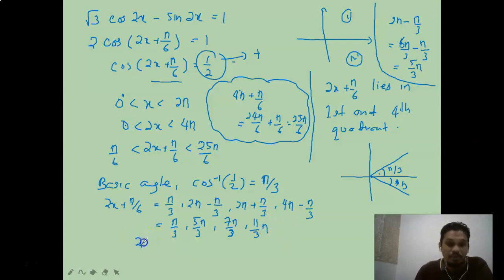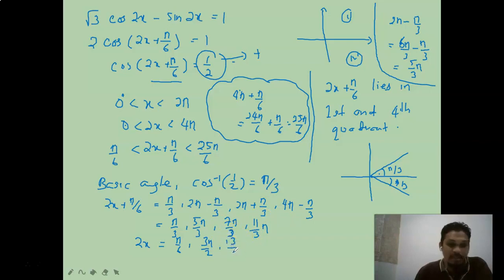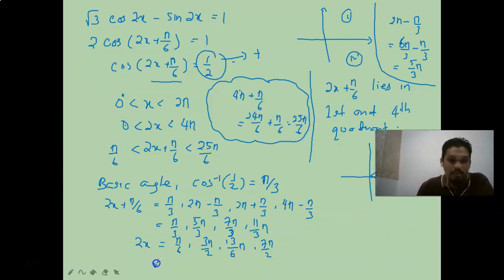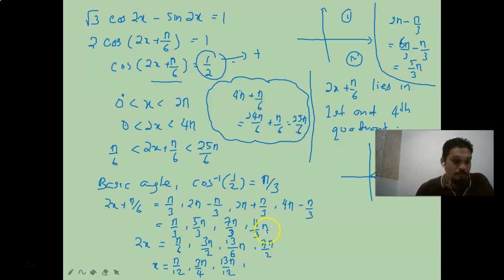Dividing each by 2 to find x: 2x = π/6 gives x = π/12; 2x = 3π/2 gives x = 3π/4; 2x = 13π/6 gives x = 13π/12; and 2x = 7π/2 gives x = 7π/4. So x = π/12, 3π/4, 13π/12, 7π/4.